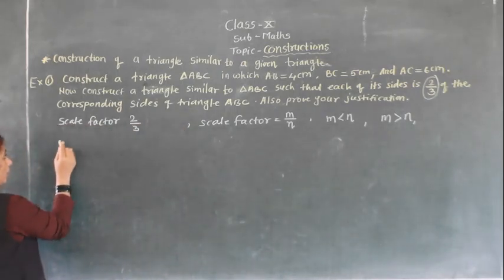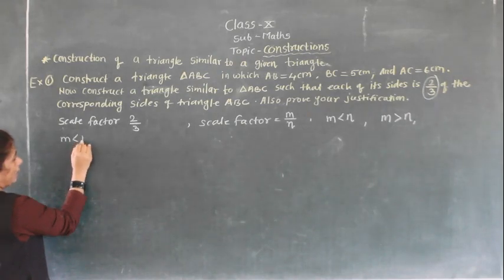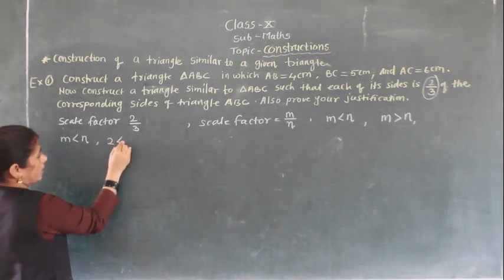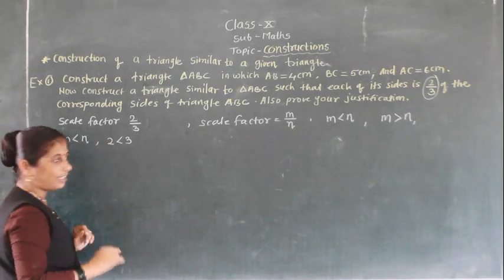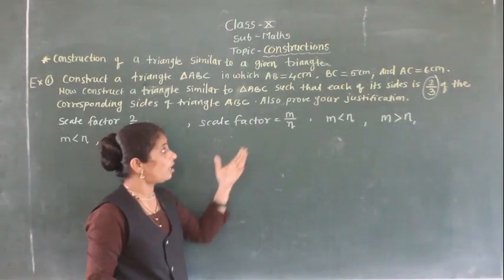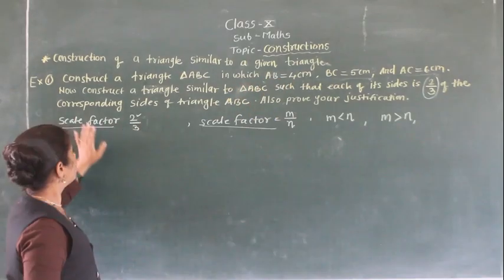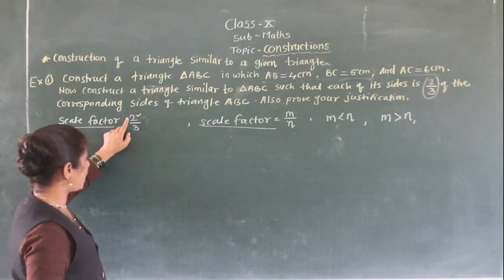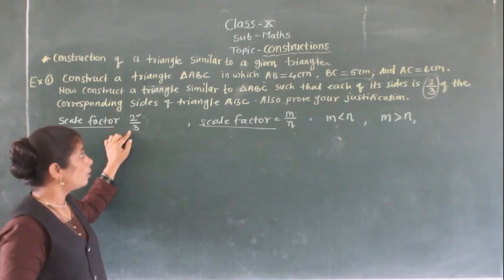Here N is less than N — that is, 2 is less than 3. So for triangle ABC with the given measurements, this is the first case where N is less than N. According to the given information, first we have to draw the triangle.